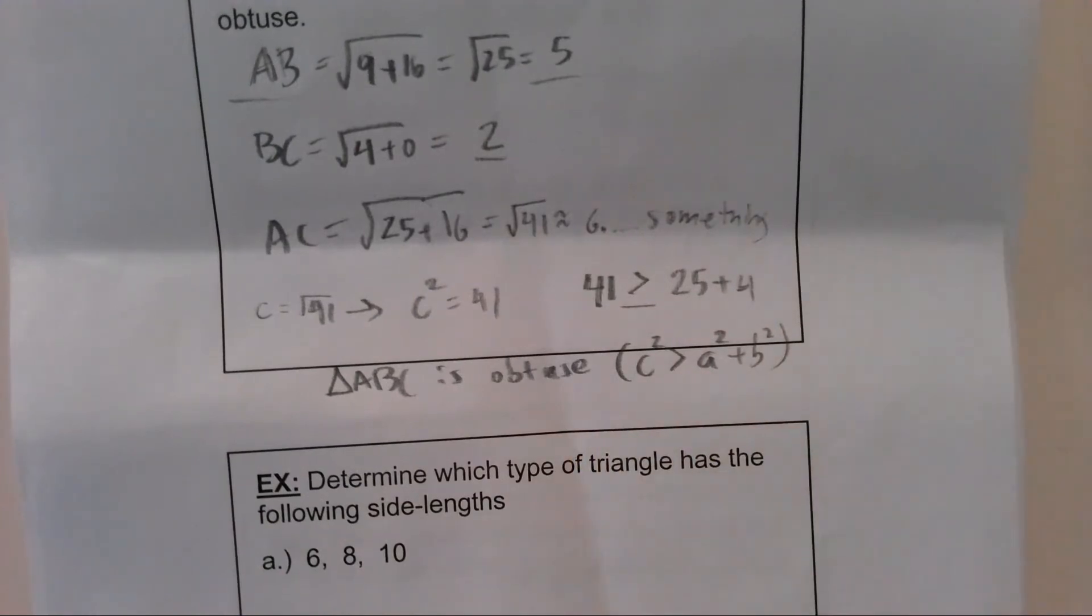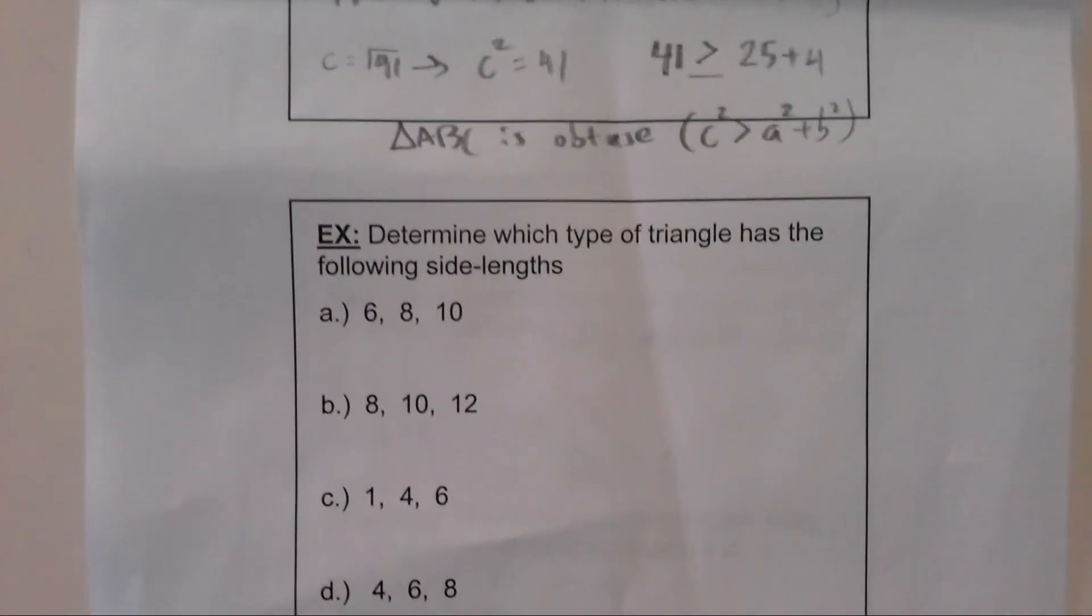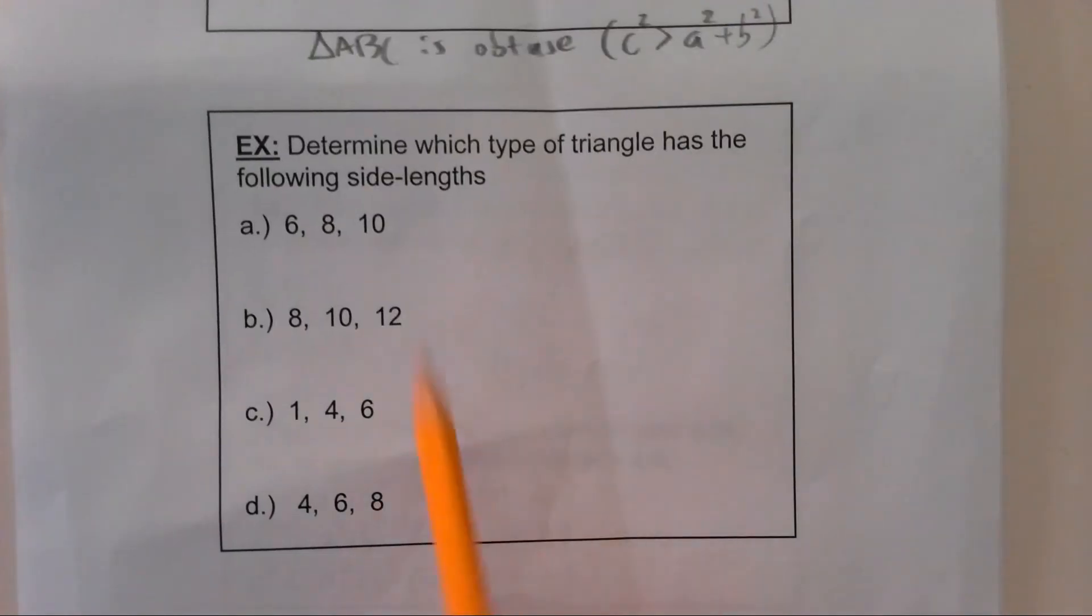Last question. We are going to look at triples and determine: are they side lengths of acute, right, or obtuse triangles? So first thing you want to do is, just like we did in that last problem, identify the value of little c.